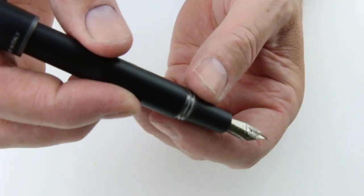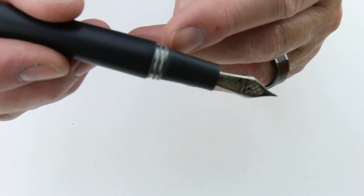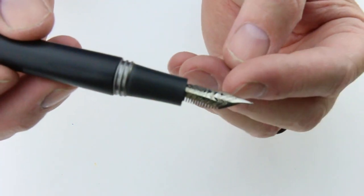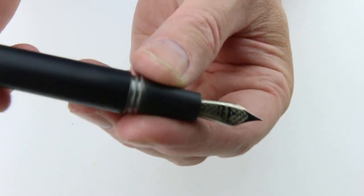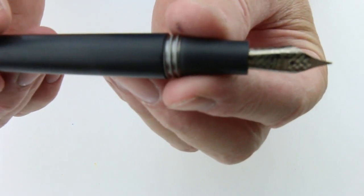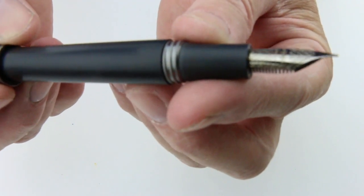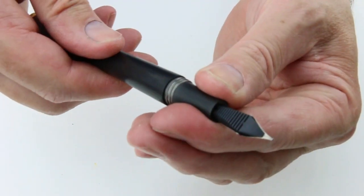That black matte finish with the threads in the same black metal and a matching black nib with the Monte Grappa logo and the filigree padding on the logo and a black feed. It is a cartridge converter pen.